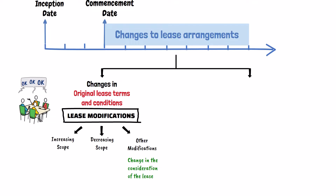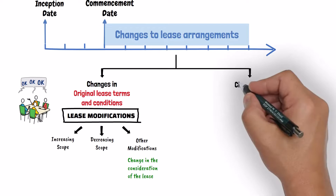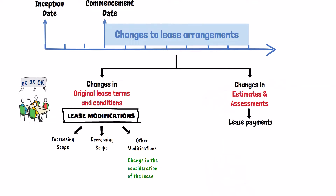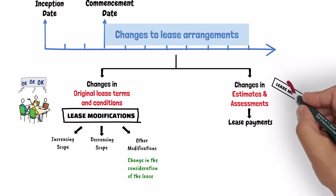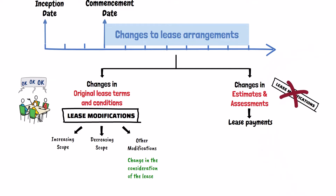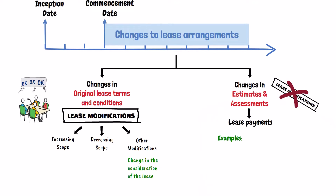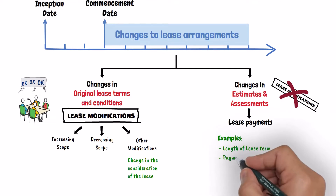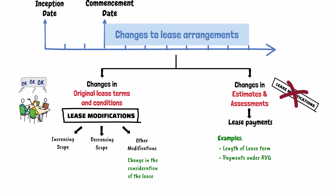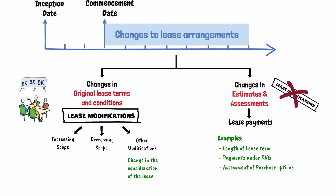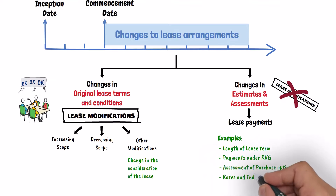The second category of changes that might occur to the lease after the commencement date is the change in the estimates and assessments on which the lease payments are based. This category of changes does not modify the terms and conditions of the original contract. Examples include changes in the assessment of the lease term, changes in amounts expected to be payable under residual value guarantees, changes in the assessment of an option to purchase the underlying asset, or changes in the rates and indices on which future lease payments are based.